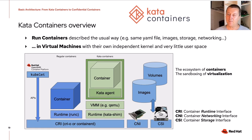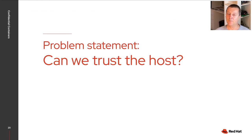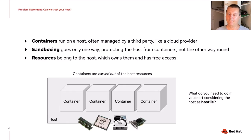This is made possible because the Kubernetes architecture is very flexible, with a number of interfaces where you can add plugins — including the container runtime interface, the container networking interface, and the container storage interface. The Kata runtime plugs in at the container runtime interface. Let me start with the problem statement: can we trust the host? Your containers run on a host that is typically managed by a third party, like a cloud provider.